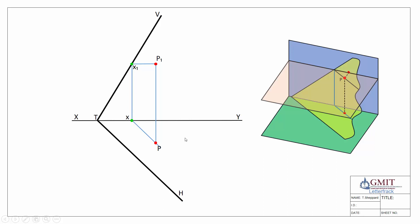One thing students can get confused about is why X appears twice in elevation. X isn't actually represented twice — sometimes students look at this and say 'why is X on the ground?' Remember, the XY line represents the ground only in elevation. In plan view, looking from above, the XY line represents the back wall. So here's X in elevation, and this is X in plan view — it's not in the elevation. That's our example where we started with P in elevation.